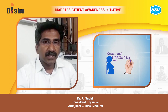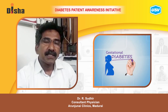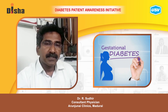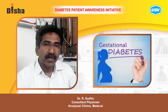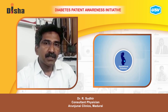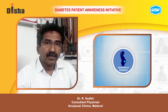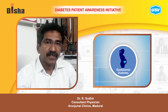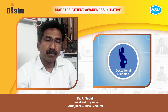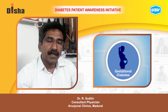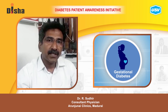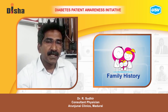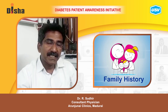Today we will be talking about gestational diabetes. Women these days are undergoing pregnancy at a later stage. Previously, pregnancies used to be completed by 20 to 25 years of age. Now women who are 30 and above are also getting pregnant. As they age, and with a strong family history of diabetes, they tend to develop gestational diabetes.